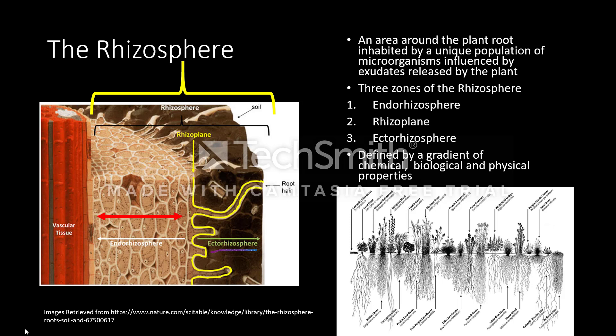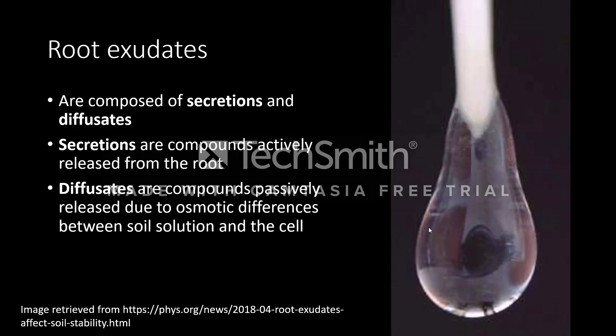The figure at the bottom represents different plant species and their unique rhizosphere. Plant roots release secretions, which are compounds actively released by the roots, and deficates, which are compounds passively released due to osmotic differences between the roots and soil solution.